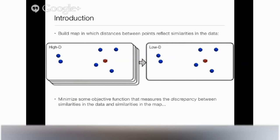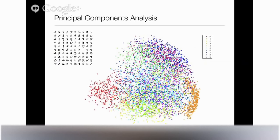What we want to end up with is something where the distances in the low-dimensional map reflect the similarities in the original high-dimensional data. To do this, we're going to minimize some objective function that measures the discrepancy between the similarities in the original data and the dissimilarities in the map. This is called dimensionality reduction, or embedding, or multi-dimensional scaling. A typical technique is principal components analysis, which finds a linear projection of your high-dimensional data such that the variance of the projected data is maximized.